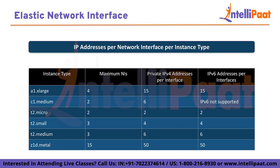Regarding IP addresses available per instance type: for a1.xlarge, the number of network interfaces allowed is 4 and private IP addresses per interface is 15, with IPv6 also at 15. For c1.medium, we have only two network interfaces allowed, six IPv4 addresses, and IPv6 is not supported. For t2.micro, only two network interfaces are allowed, the private IP addresses allowed per interface is two, and IPv6 is also allowed with two per interface. For t2.small, three network interfaces are allowed, four private IPv4 addresses per interface, and four IPv6 addresses per interface.